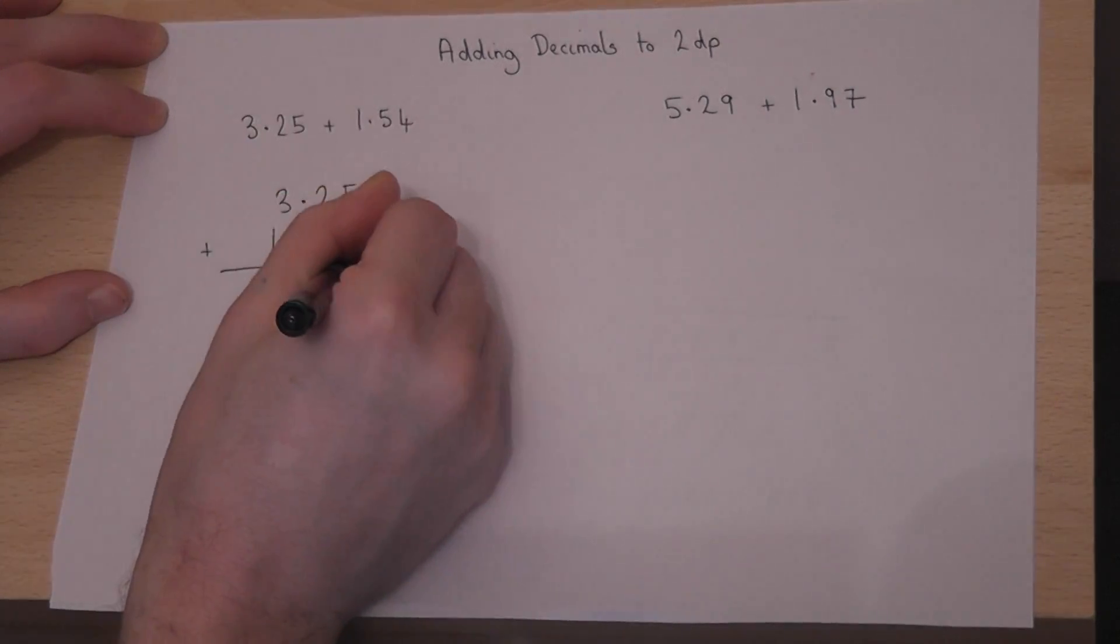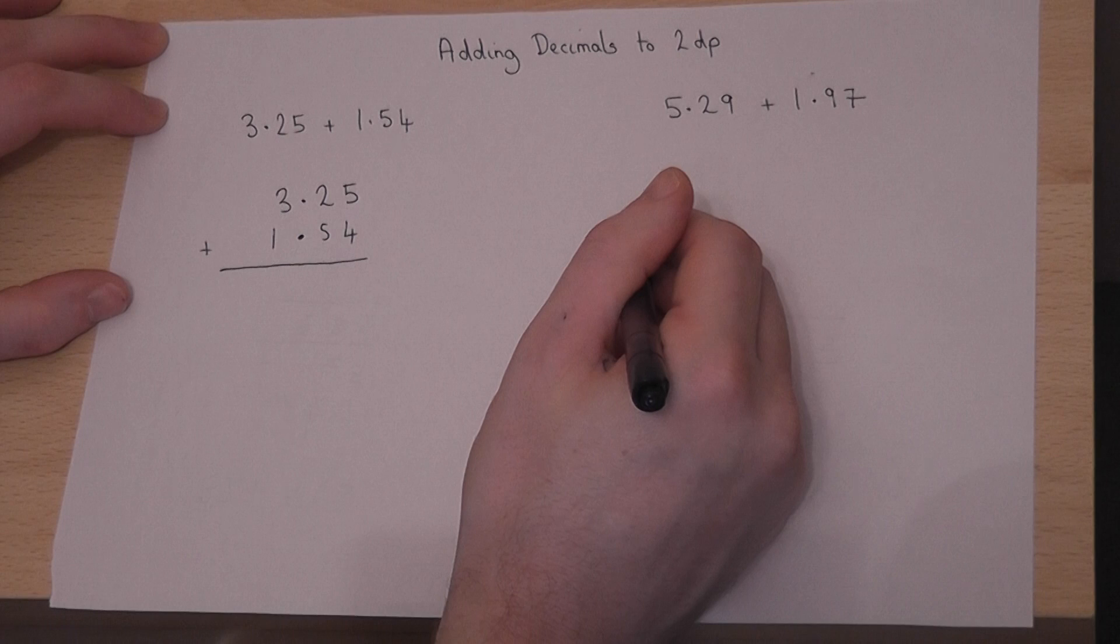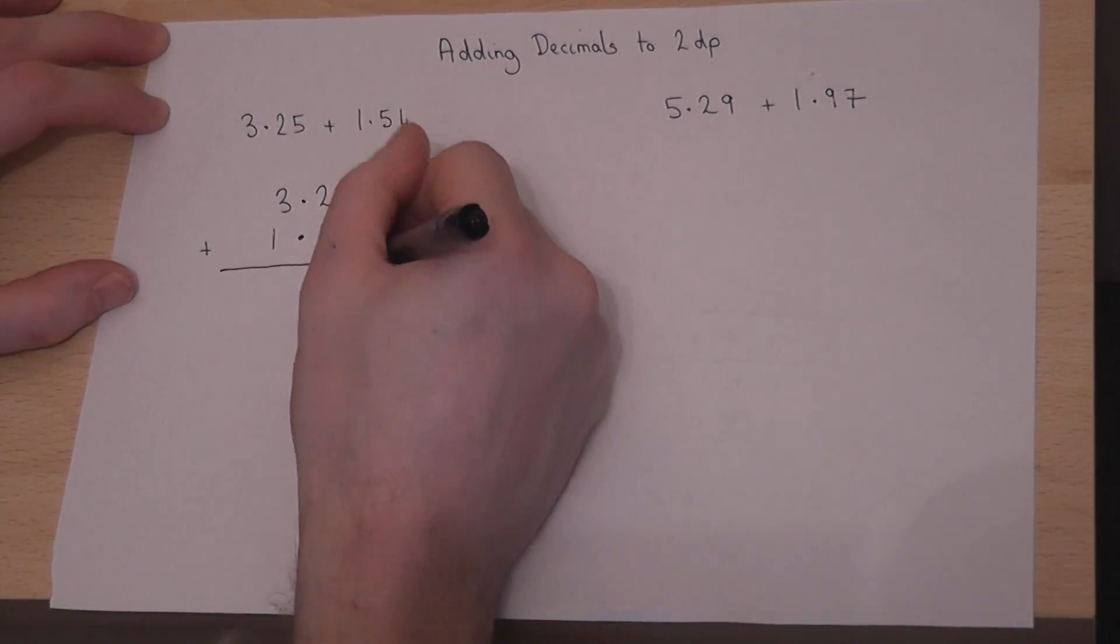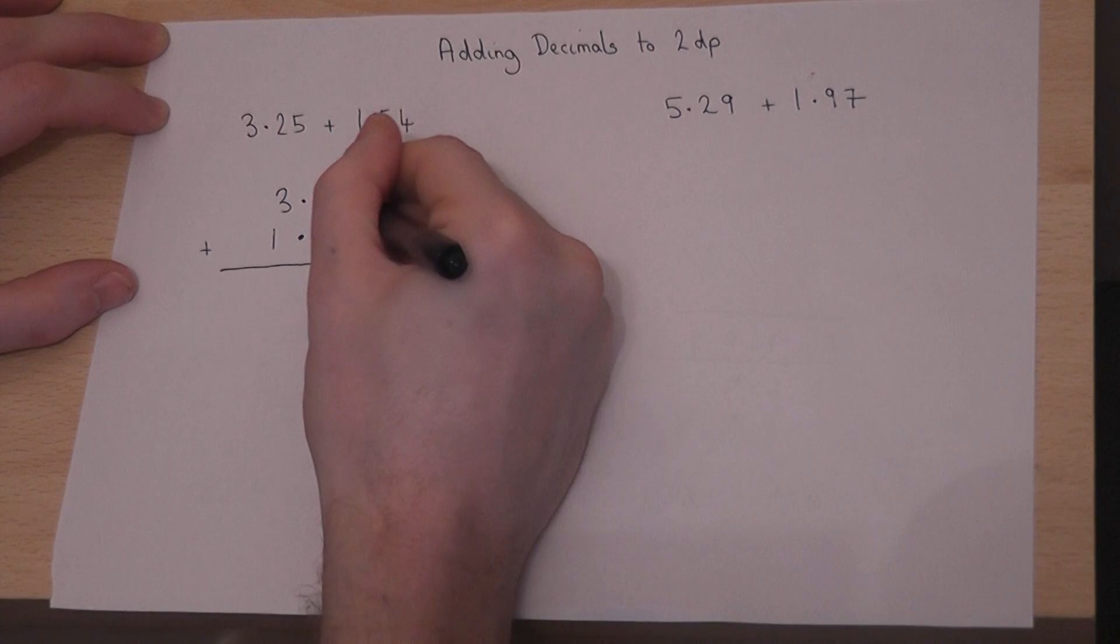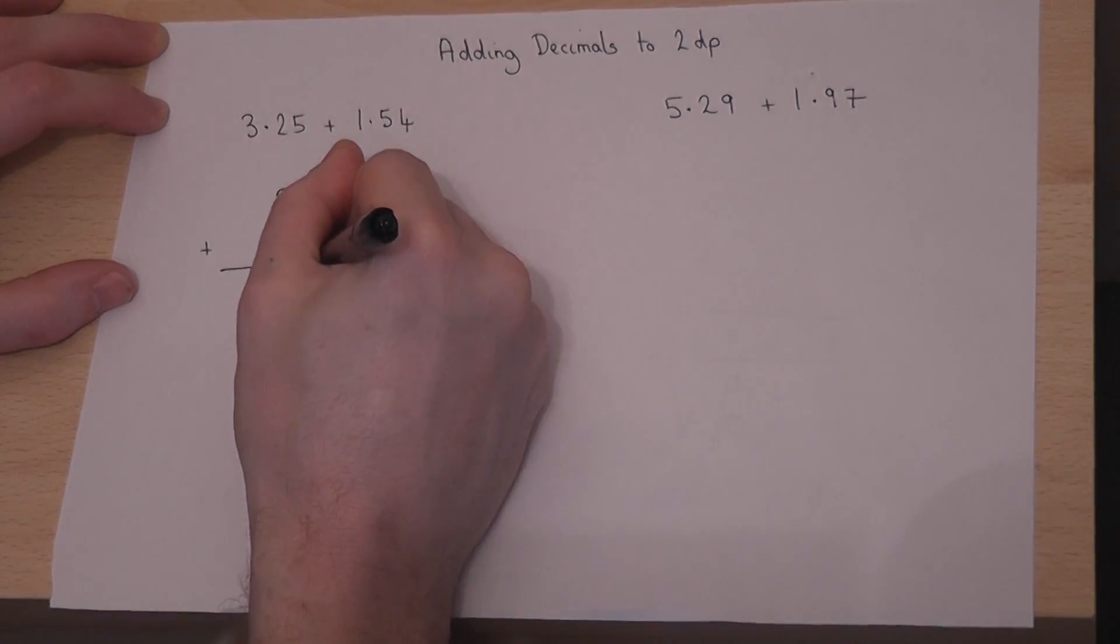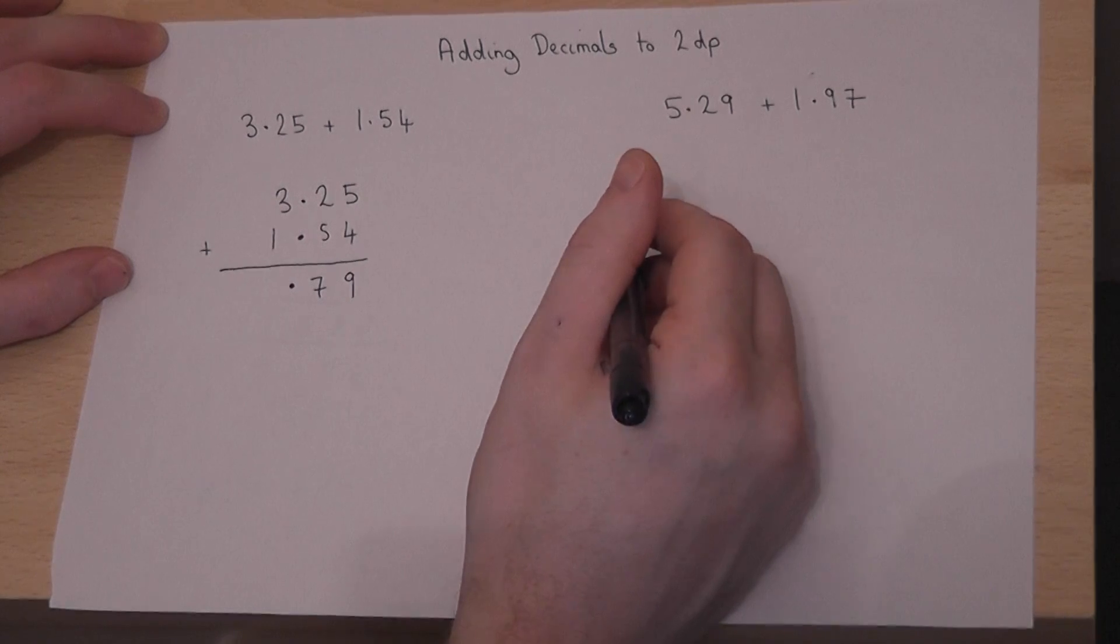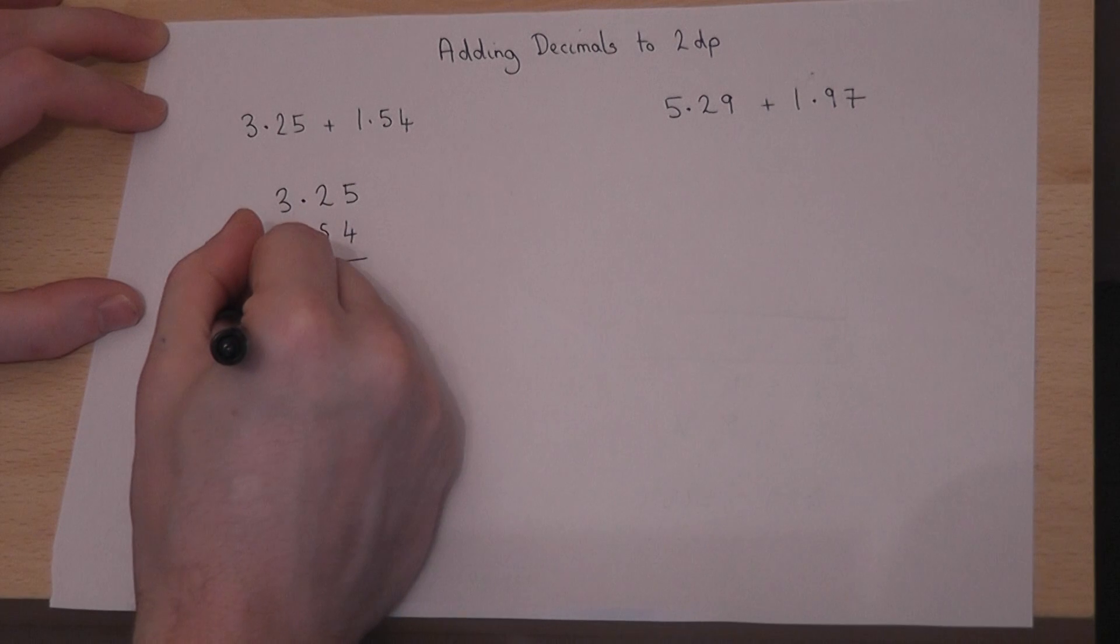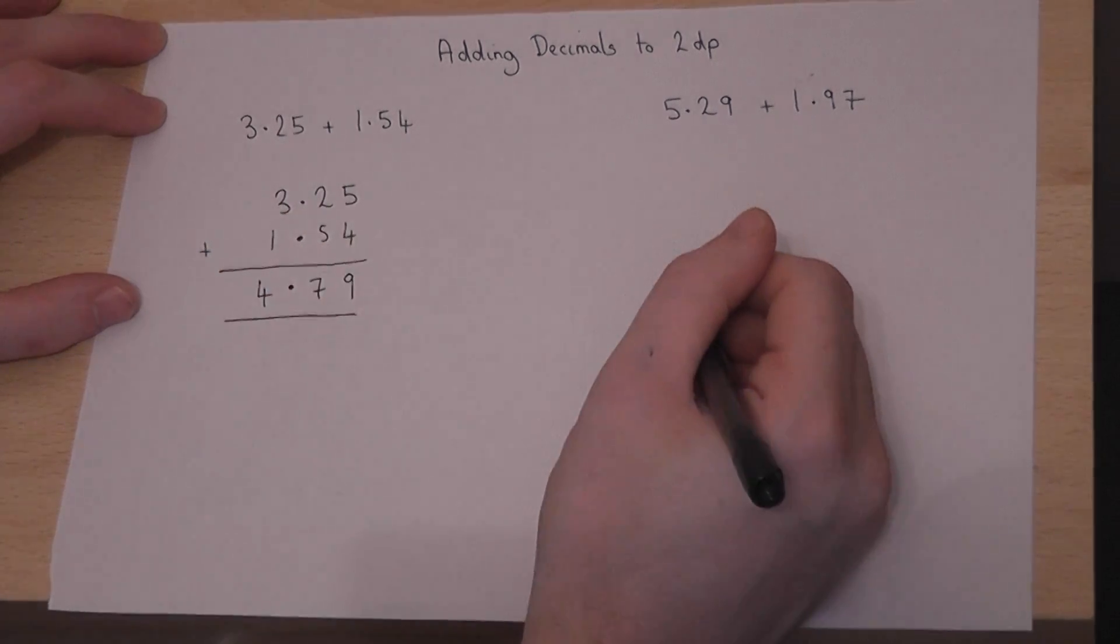We then add up from the right. Absolutely essential that. So 5 plus 4 is 9. 2 plus 5 is 7. We place the decimal point below. And 3 plus 1 is 4. So the answer to that is 4.79.